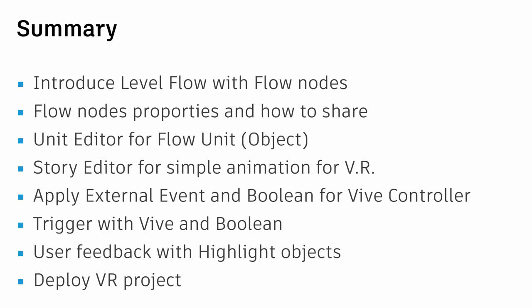Let's review what we learned today: we introduced Level Flow nodes with connections and properties, and learned how to share nodes by copying and pasting into a text editor. Each object can use the Unit Editor to create its own flow. We used the Story Editor for simple animation, applied External In Events and boolean for Vive touch to activate animation, combined boolean with a trigger button, and added a highlight node for user-friendly feedback. We also learned how to deploy a VR project.